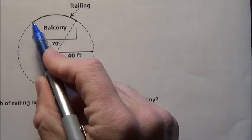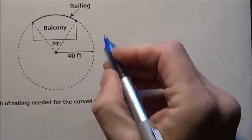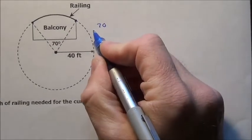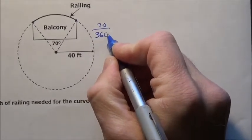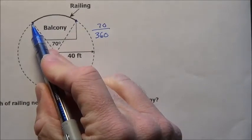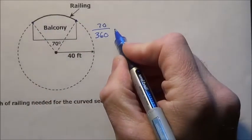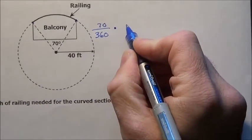Well, if the central angle is 70, this is 70 degrees out of 360. So the fractional part is 70/360. This length will be 70/360 of the total circumference times the circumference.